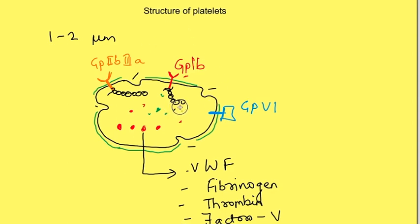The other granules, the dense granules, contain ADP, ATP, ionized calcium, and serotonin. All these substances have a role in platelet aggregation and adhesion, which is part of another video.